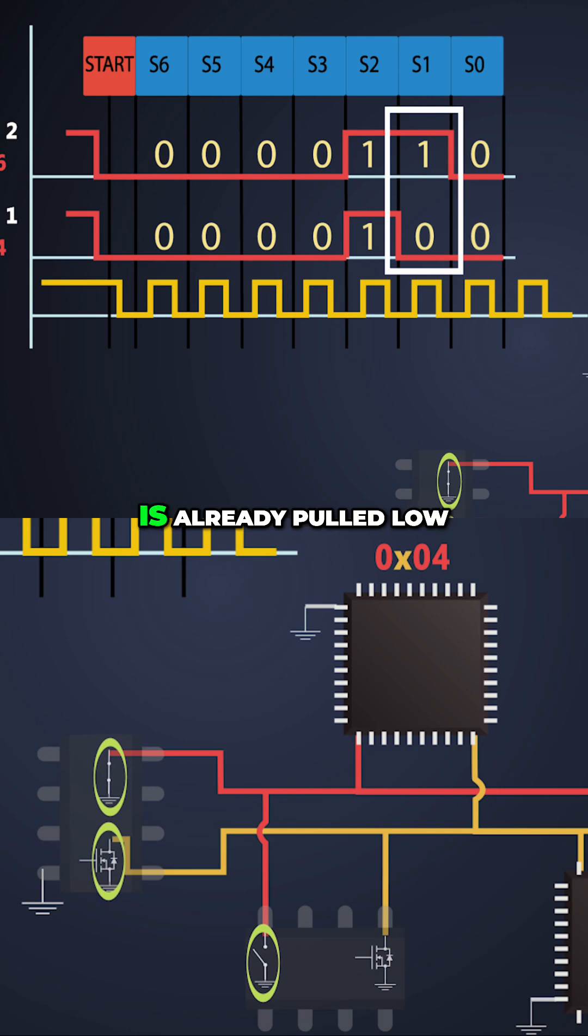But the SDA line is already pulled low by the internal transistor of Master 1. Master 2 understands that even if it kept the SDA line high, it is showing low, that means some other device is accessing the bus at the same time.